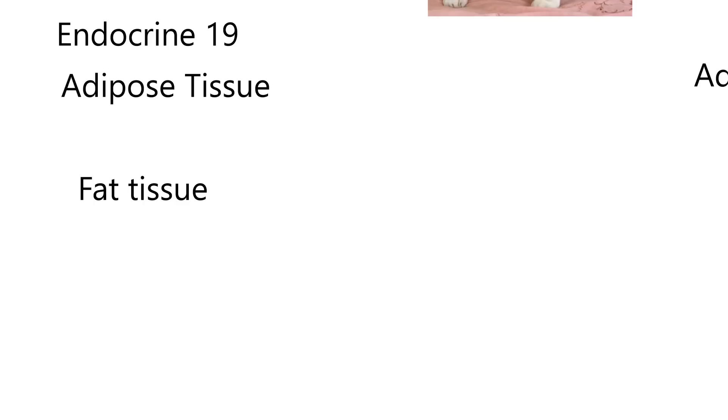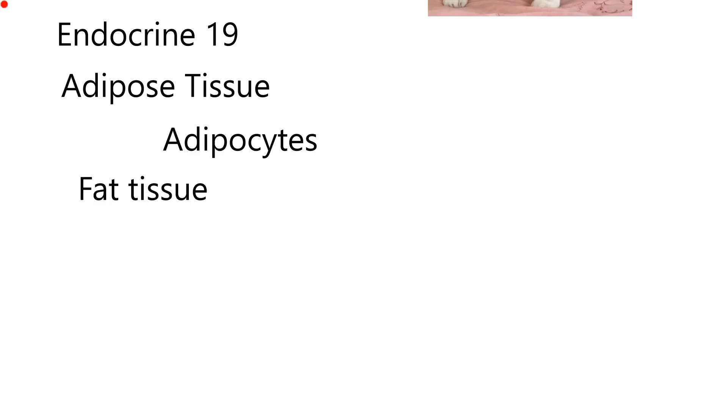Adipose tissue is made up of cells called adipocytes. I've heard it pronounced both ways - adipocytes or adipocytes. Cytes means cell, and adipo means fat.